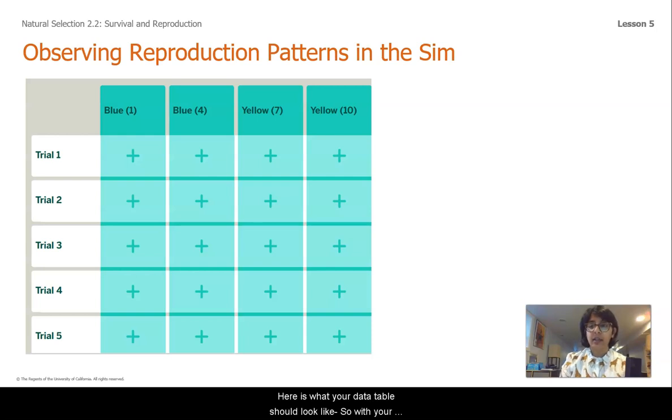Here is what your data table should look like. So with your pen or pencil and your notebook, you can grab a ruler if you want to be particular about it. You are going to create this table in which we will be recording data for each of these different ostrilopes with different color levels of 1, 4, 7, and 10. And we'll have five different trials here.